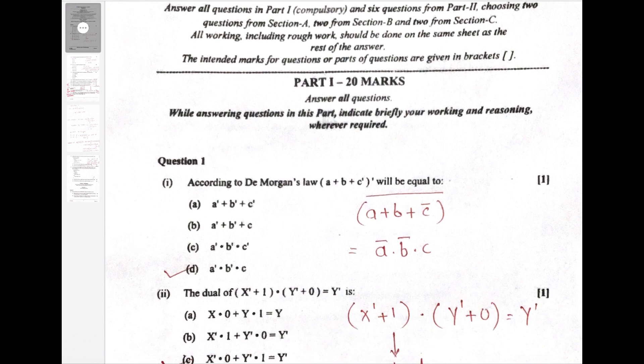According to de Morgan's law, the given expression will be equal to what? Now we will solve the given expression using de Morgan's law. Complement of this whole expression will result into A bar dot B bar dot C. So option D is correct.